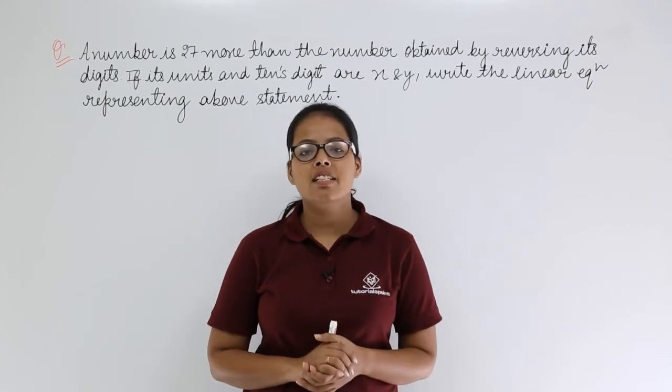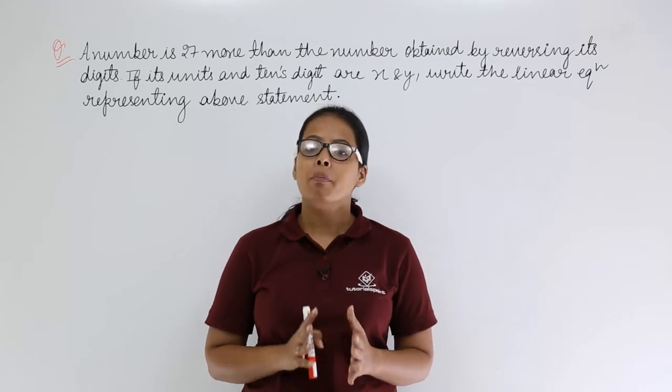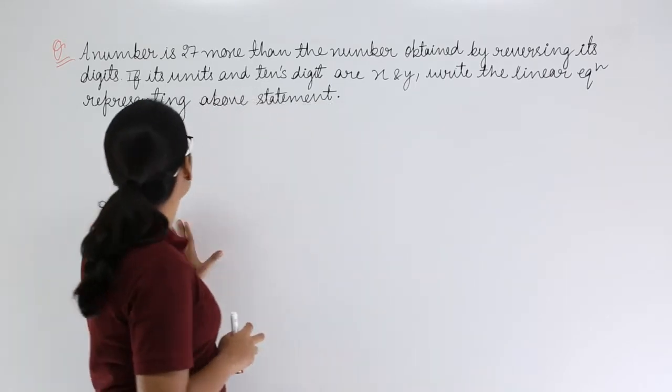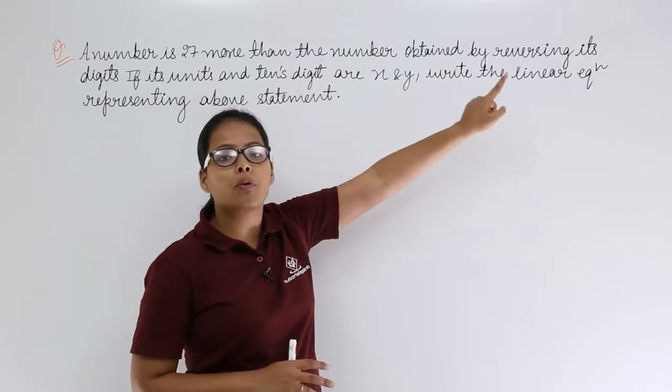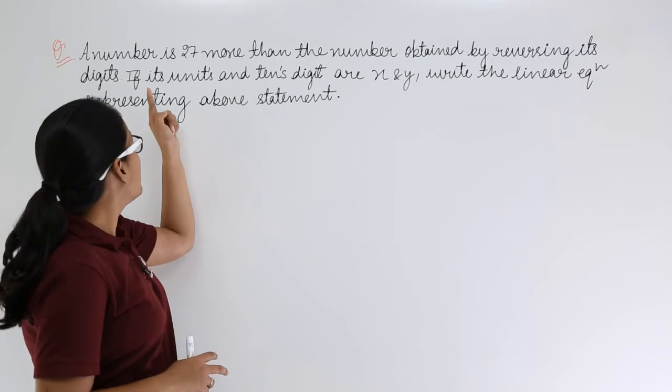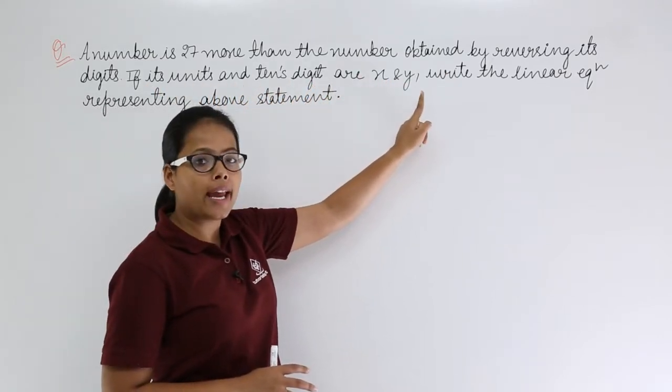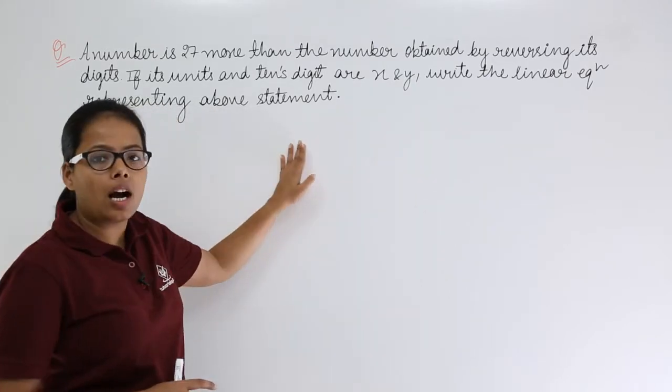Hello guys, let's discuss this problem based on linear equations in two variables from R.D. Sharma, which says a number is 27 more than the number obtained by reversing its digits.